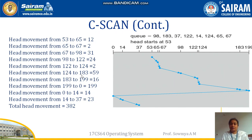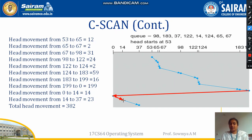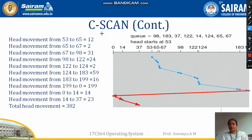After reaching 183, the disk moves to the last position 199, which is 16 values. Then from 199 it directly goes to 0. From 0, it starts allocating in the forward direction. The remaining values 14 and 37, which were behind 53, are now allocated. Once all head movements are found, add them all to get the total number of head movements for C-SCAN disk scheduling.